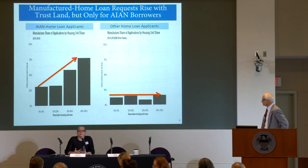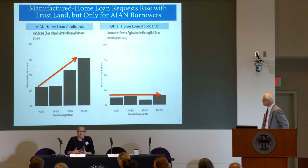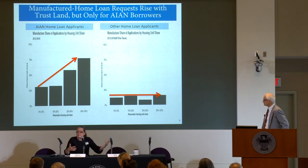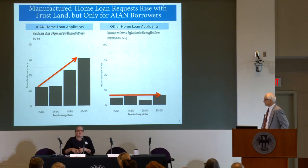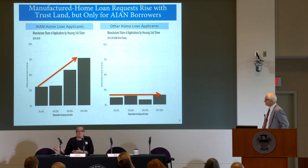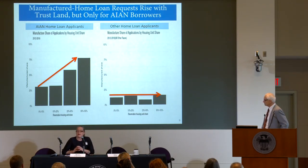To put it in slightly different terms, this is about creating the opportunity for choice. There's a signal here that the choice for site-built homes is just lower on trust lands, which we know, but these data begin to back that up. There's less supply there than there should be. The choice shouldn't just be manufactured home or rental — it should also be a site-built home, and these data push in that direction that wide range of choice just isn't there.